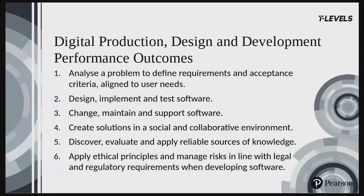The Digital Production, Design and Development Occupational Specialism has six performance outcomes, or POs for short. You will see in the specification there are eight knowledge or skill statements your students must achieve. In the main, they are identical to the performance outcomes shown on screen, except for PO2. In the specification, this has been split into three: implement a solution using two appropriate languages, and test a software solution. For each performance outcome, it is broken down into several skill statements — what your students are expected to be able to do or demonstrate. There are also a number of underpinning knowledge statements, which are what your students need to know and understand in order to demonstrate these skills.